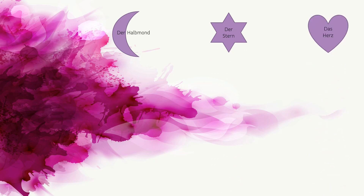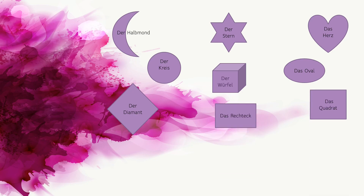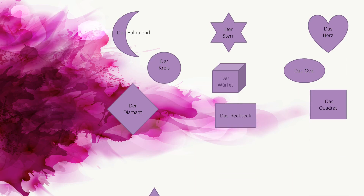Now let's learn them together once again. Der Halbmond. Der Stern. Das Herz. Der Kreis. Der Würfel. Das Oval. Der Diamant. Das Rechteck. Das Quadrat. Das Dreieck. Das Sechseck. Das Fünfeck.